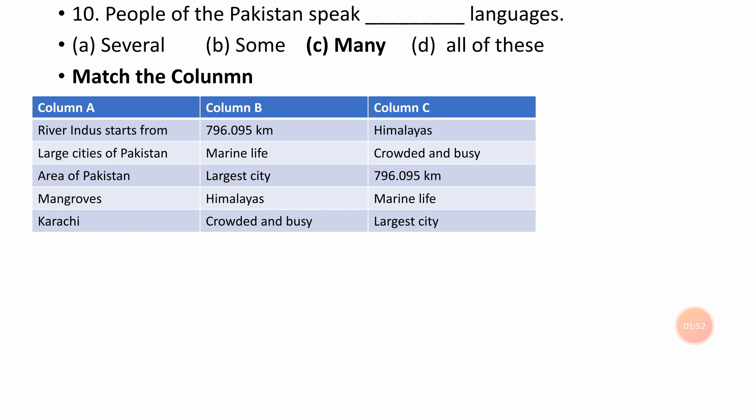Column A: Rivers in the northern form, large cities of Pakistan, area of Pakistan, mangrove, Karachi. Column B: 796,095 km, marine life, largest city, Himalayas, crowded and busy. We search the answer of column A in column B. Rivers in the northern form — Himalayas. Large cities of Pakistan — crowded and busy. Area of Pakistan — 796,095 km. Mangrove — marine life. Karachi — largest city.